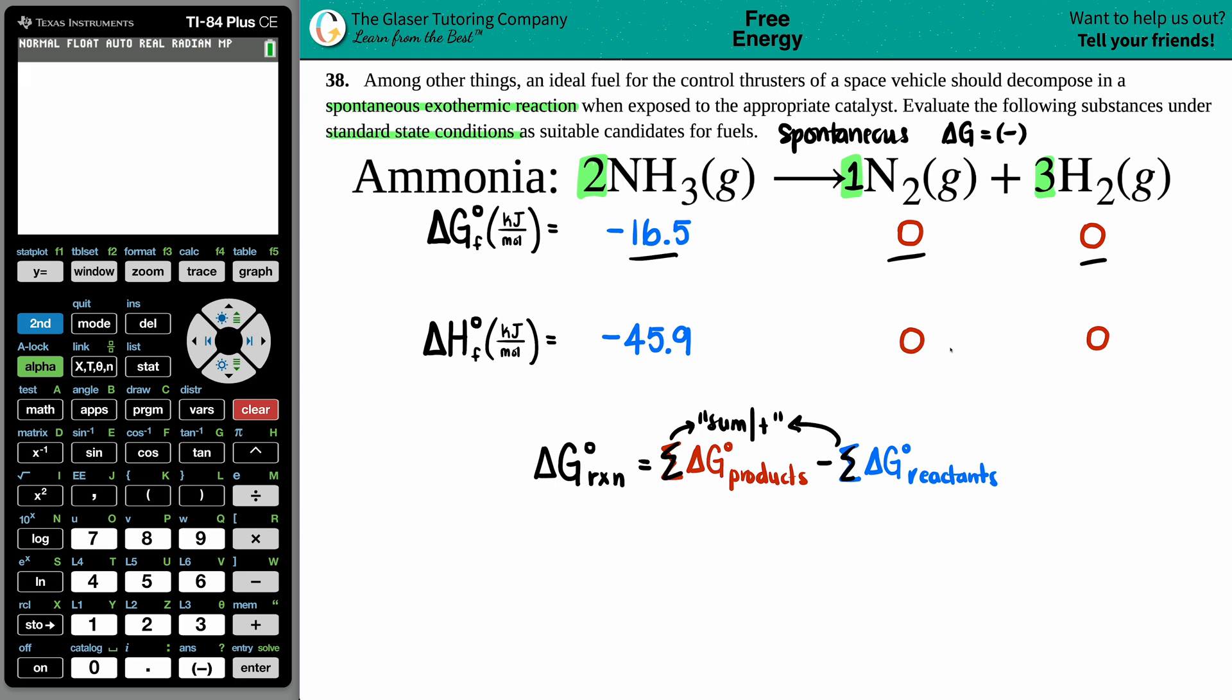I'm going to take my negative 16.5 and times it by two, one times zero, and three times zero, because that's what the coefficients say. Now we have to sum them up—literally it's N2 plus H2. Technically they're both zero, but just to show, you have to add them together.